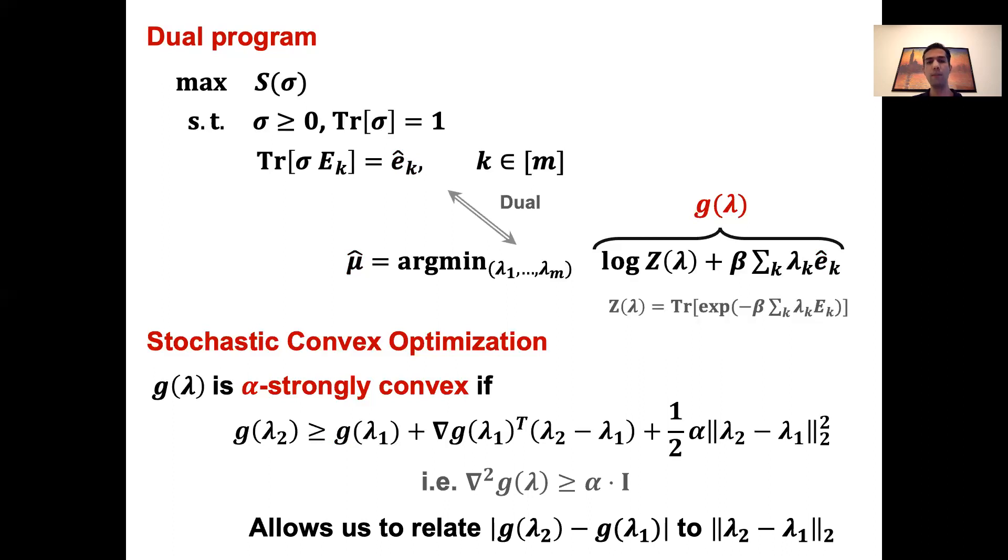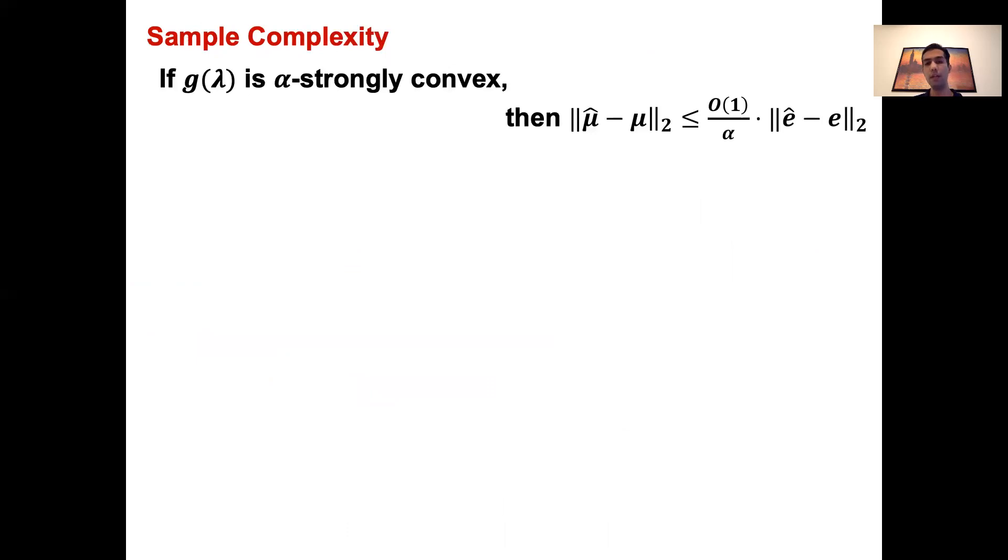Loosely speaking, this property allows us to relate a difference in the value of the function to a difference in the input variables. In our case, the deviation in the value of the function is caused by replacing the local expectations with their estimated values. And the L2 difference of the inputs is the deviation in the interaction coefficients caused by this. More formally, we can show that if the function is alpha strongly convex, then the error in the interaction parameter is at most order 1 over alpha times the error in the local expectations. The linear term in G(lambda) doesn't affect the strong convexity. So what we need is basically the strong convexity of the log-partition function.